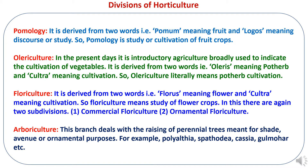Now we will study the divisions of horticulture. First is Pomology, derived from poma meaning fruit and logos meaning study — so pomology is the study or cultivation of fruit crops. Then Olericulture, broadly used to indicate the cultivation of vegetables, derived from oleris meaning potherb and cultura meaning cultivation. Then Floriculture, derived from flores meaning flower and cultura meaning cultivation, which means the study of flower crops. Floriculture has two subdivisions: commercial floriculture and ornamental floriculture.